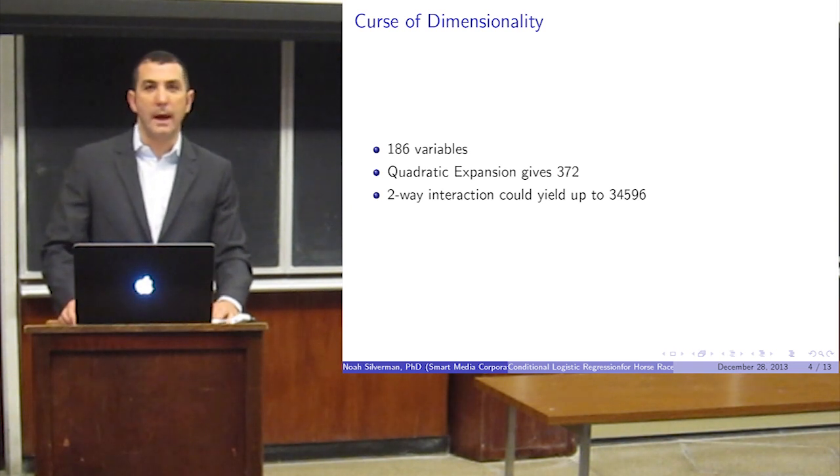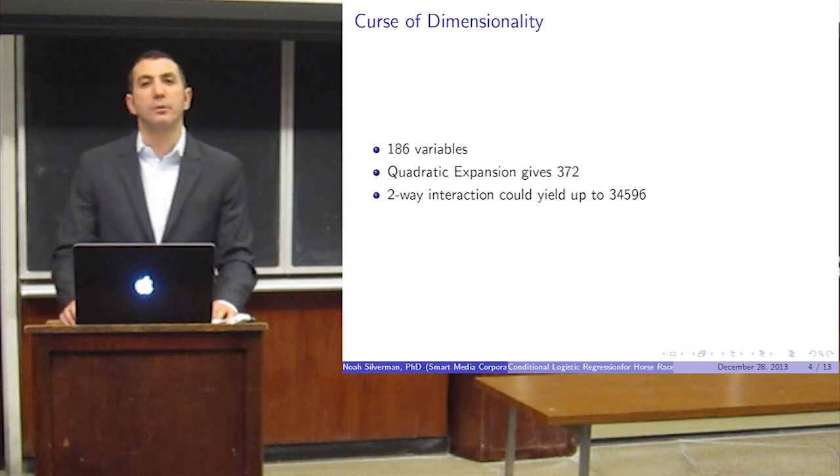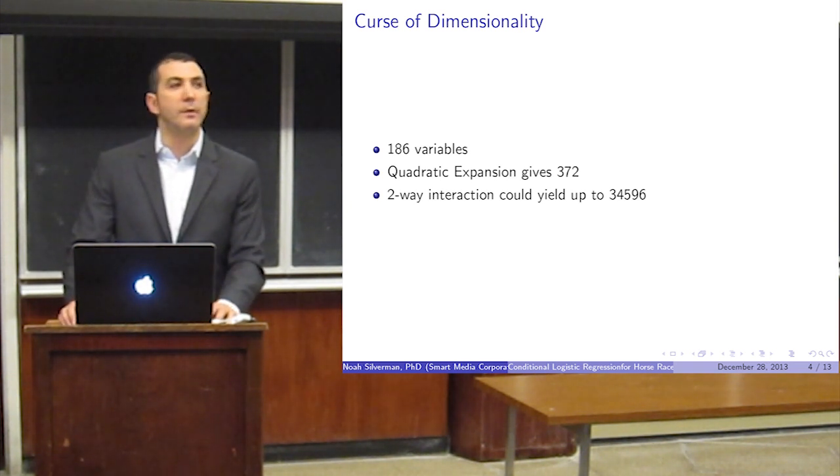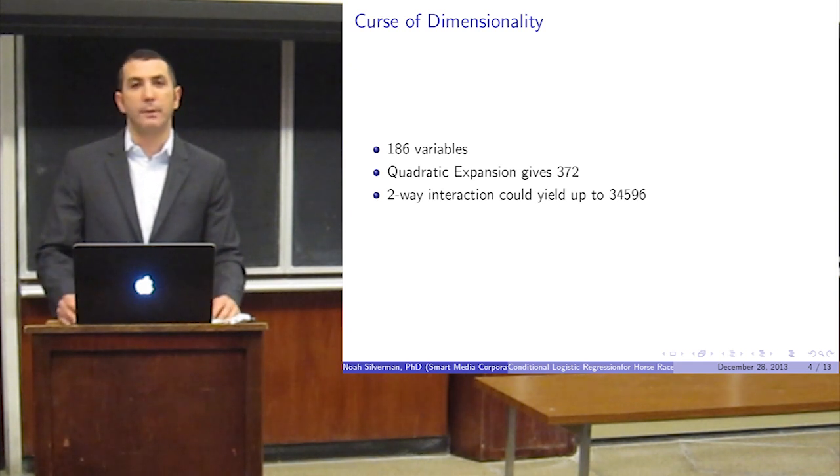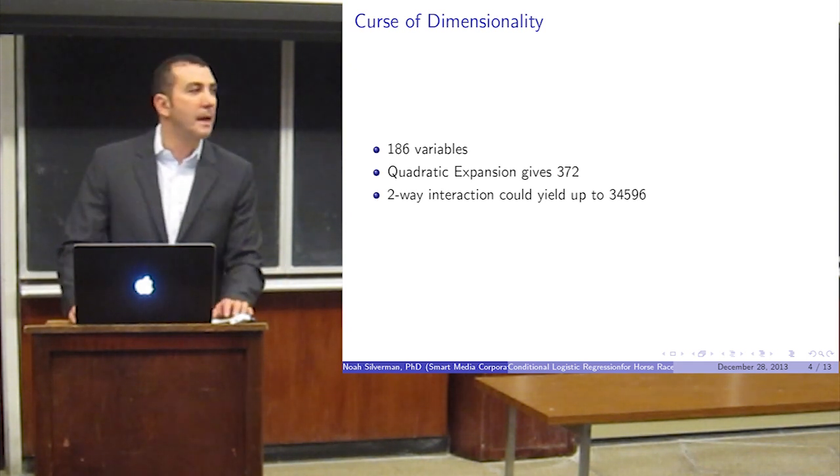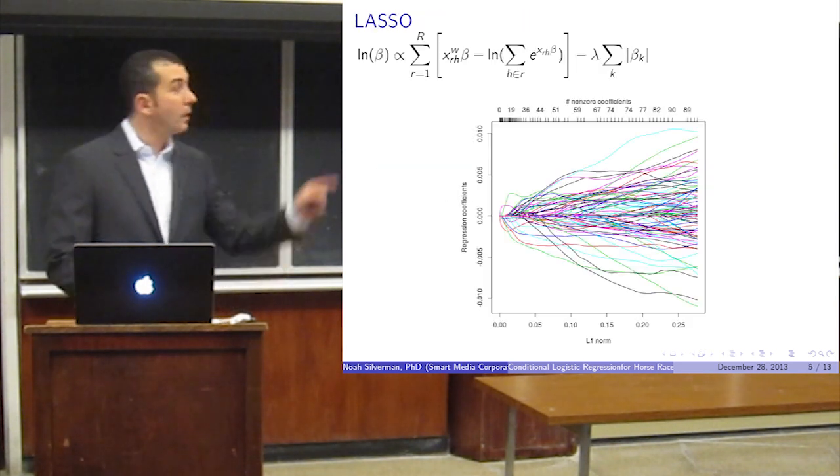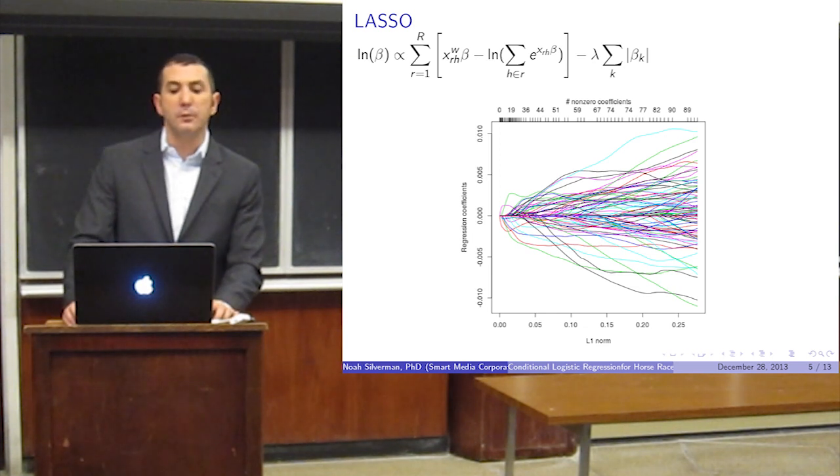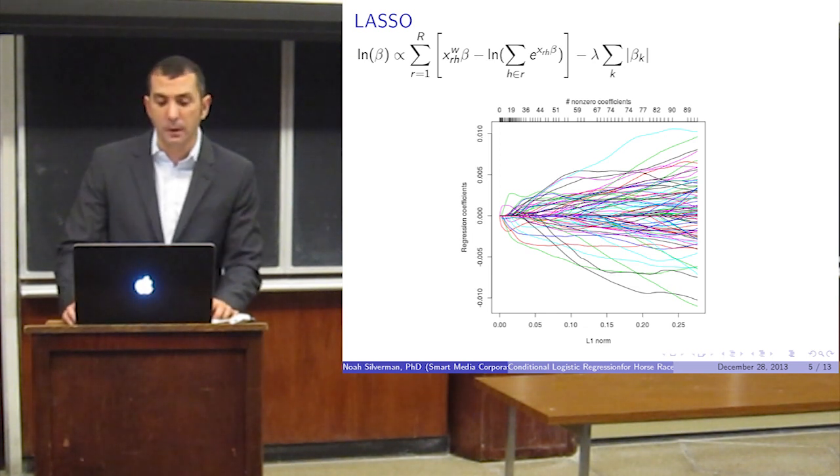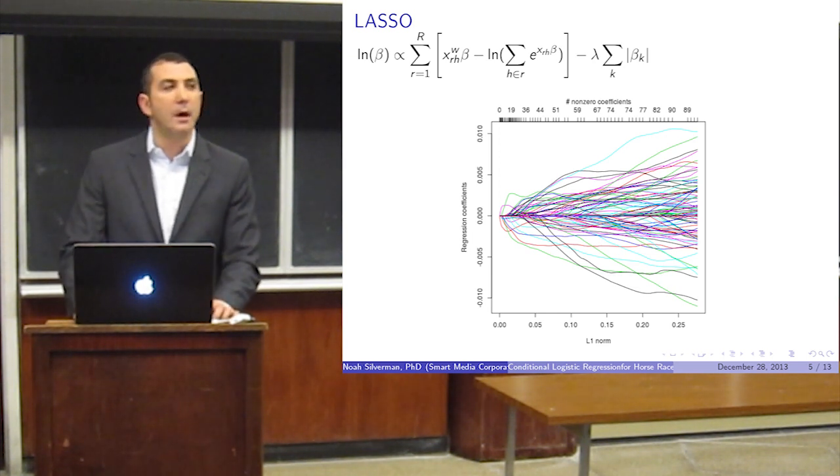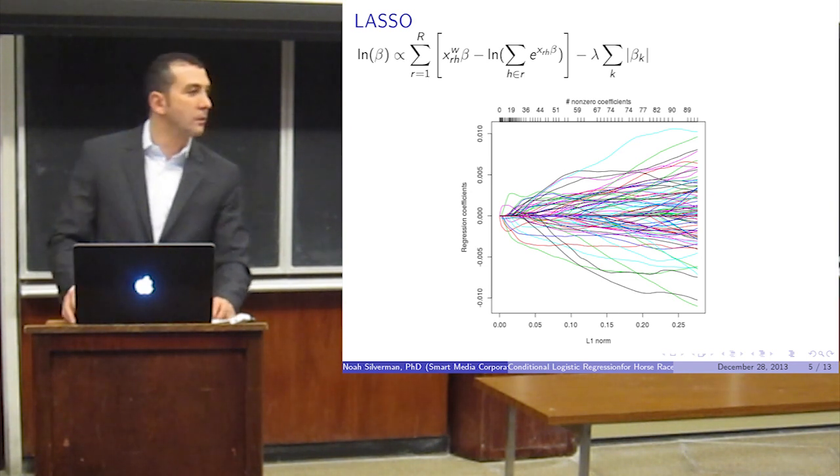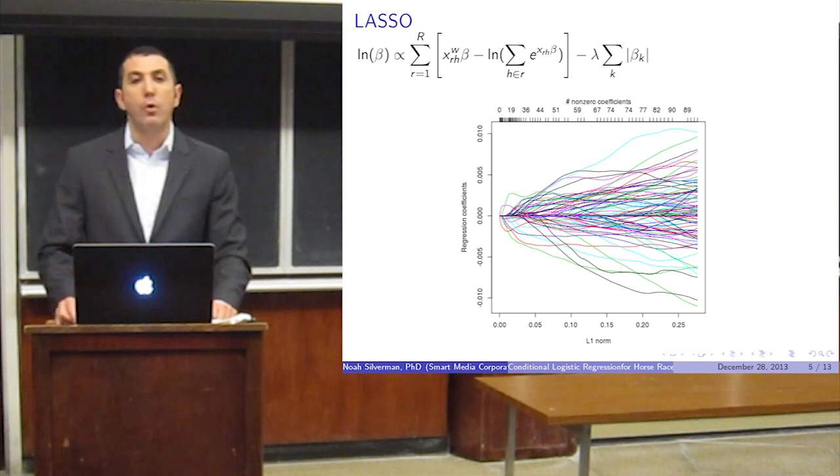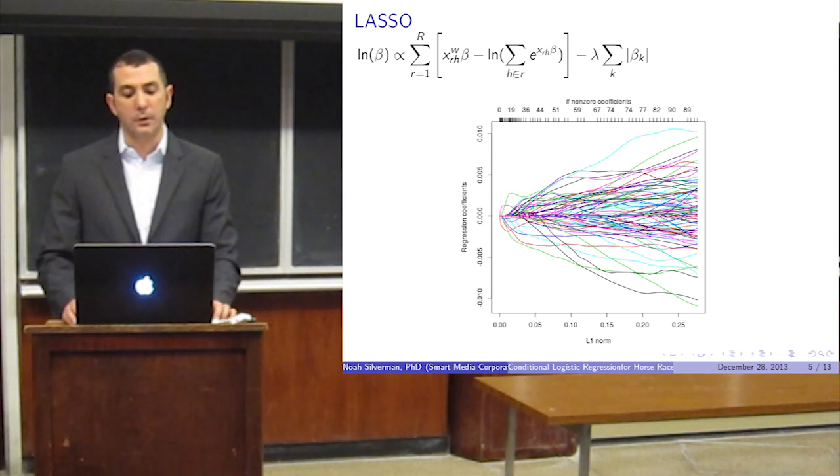The other thing we want to look at is what variables are significant. Obviously, with too many variables, the problem becomes wide, not tall, and as you know, a lot of regression stuff doesn't work. To do that, I like to implement what's called a lasso, which puts a penalty factor, it's the second part of the equation, the lambda times the sum of betas, and basically you tune that penalty factor, and it will push the less significant coefficients towards zero.